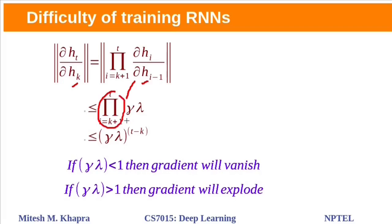We know this term is product of such terms. So we can write like this, this product has t minus k terms. If this product of lambda and gamma is less than 1, then this term will have value very close to 0. So gradient will vanish.